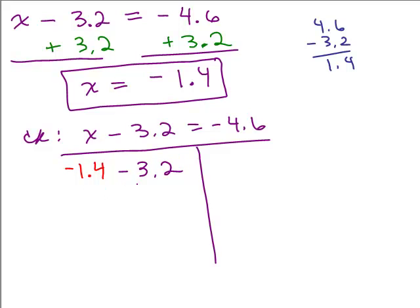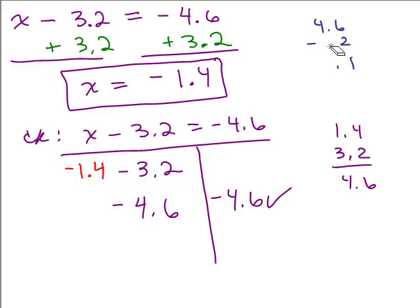And now we have to simplify the left side. So we've got negative 1.4 minus 3.2, and that's like adding negative 1.4 plus negative 3.2, so you're adding two negatives. You know it's going to be negative. And go over here and just add them up, 1.4 and 3.2 add up to 4.6, so this is negative 4.6. That's what the left side simplifies to. And on the right, I also have negative 4.6, so it checks. So our answer, written in braces to show the solution set, would be negative 1.4.